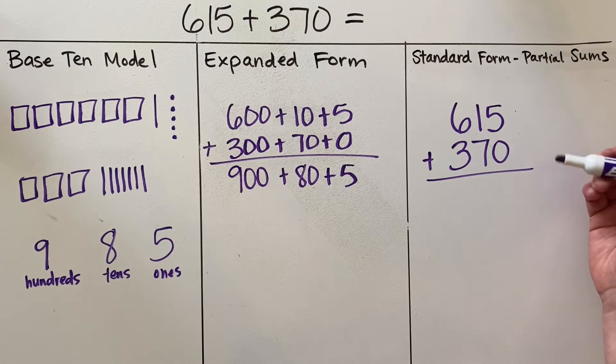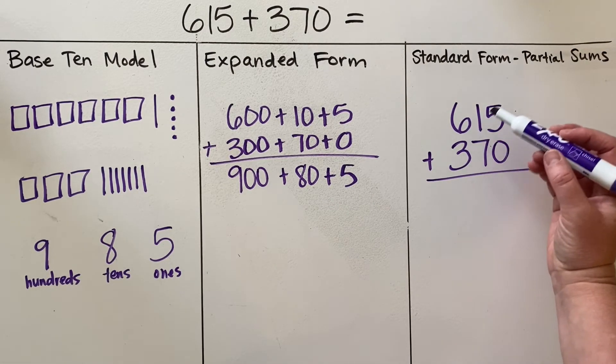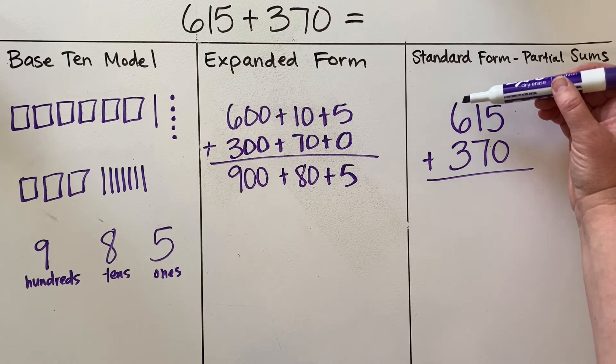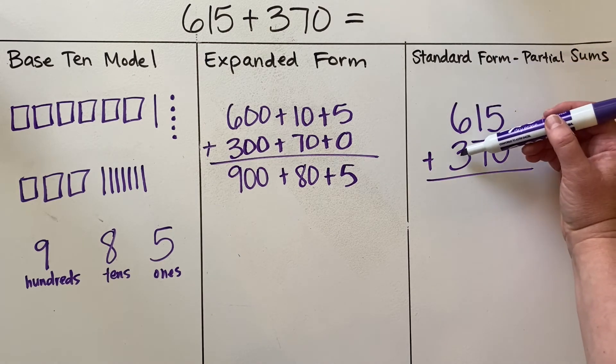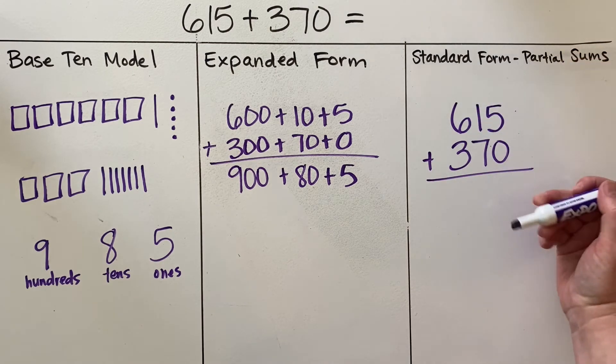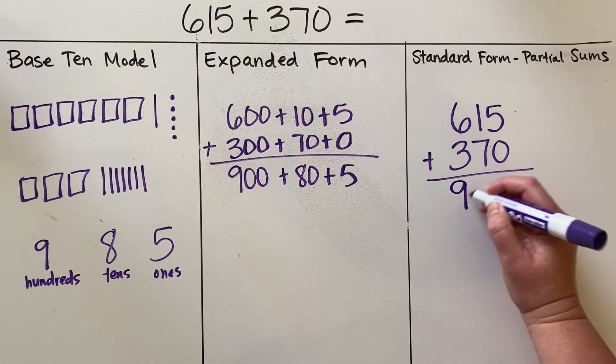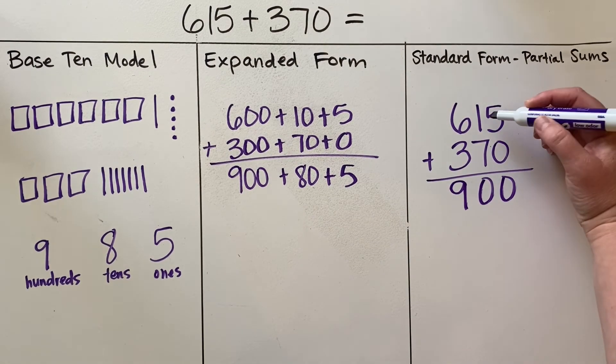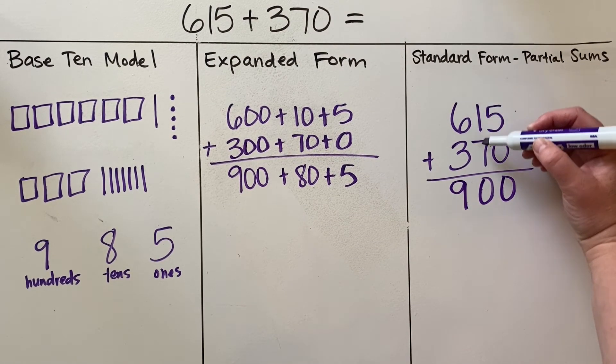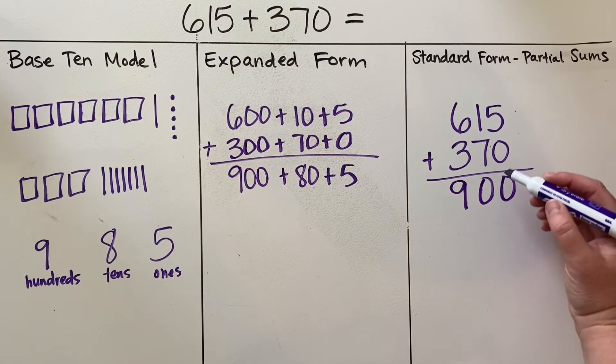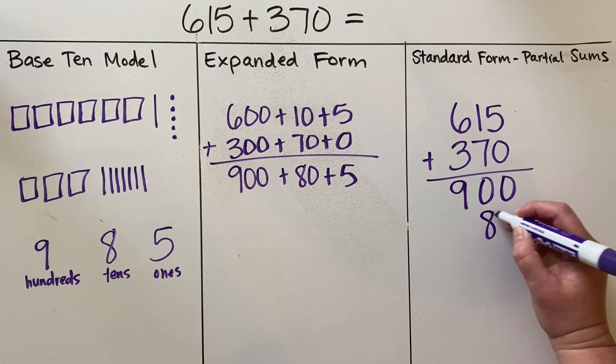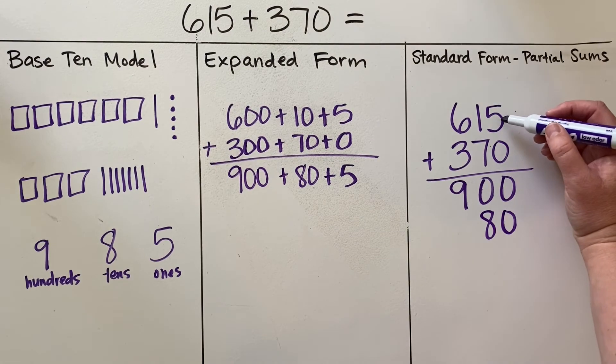Then we go through and we're going to do partial sums. So doing the same thing, I'm looking at my hundreds. In the hundreds place I have a 6 and a 3, so that's 600 plus 300. If I add that together, it is 900. In the tens place, I have a 10 and 70—adding that together is 80. In the ones place, I have 5 plus nothing, so that is 5.